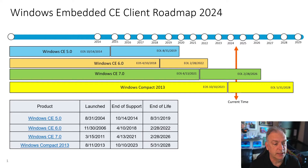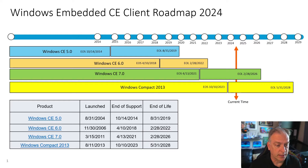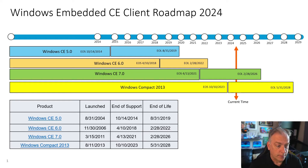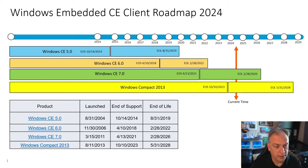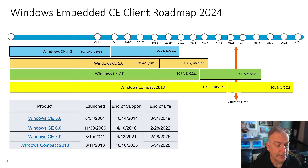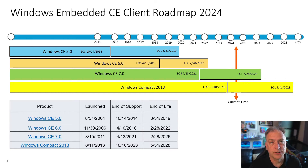The last one, Compact 2013, had its support end this past October 2023, and that only leaves the life of the product. Only two products still have life: CE 7 and Compact 2013. CE 6, CE 5, and older are all done — that product doesn't exist anymore from the perspective of a COA sticker or buying it. CE 7 end of life is February 28, 2026, and Compact 2013 takes you to May 31st, 2028.